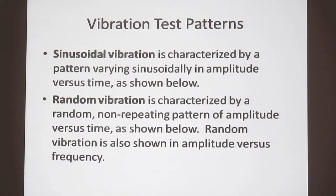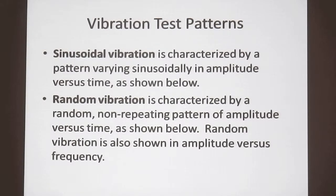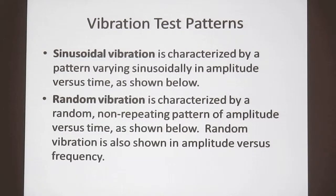Sinusoidal vibration is characterized by a pattern varying sinusoidally in amplitude versus time, as shown below. Random vibration is characterized by a random, non-repeating — and that's the key word — non-repeating pattern, amplitude versus time, also shown below. Random vibration is also shown in amplitude versus frequency.